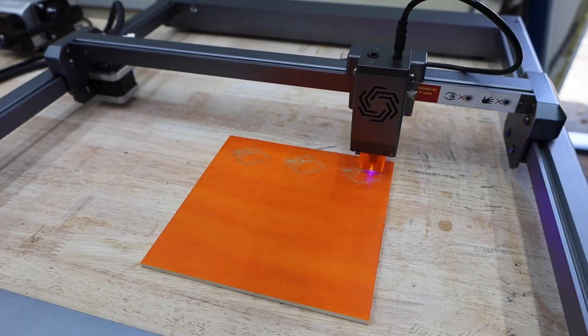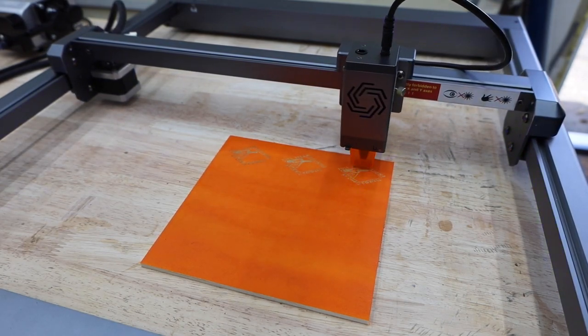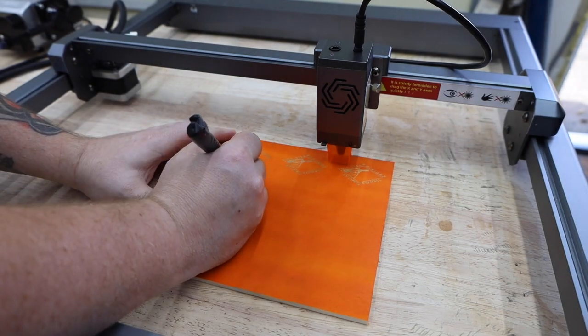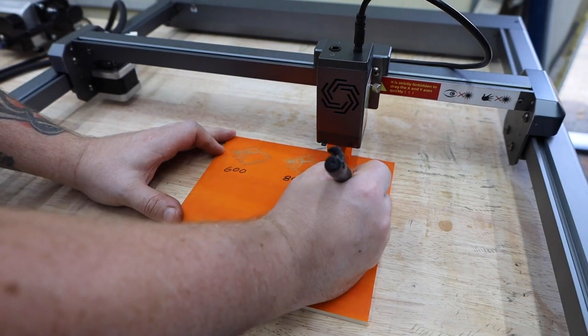Not only can it engrave wood, but you can also use it to remove paint. Here's a few examples of the effects of different speeds.